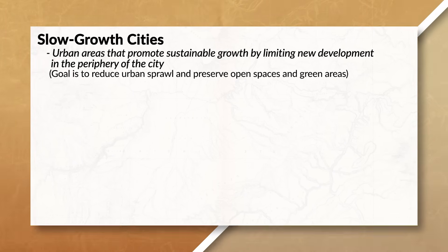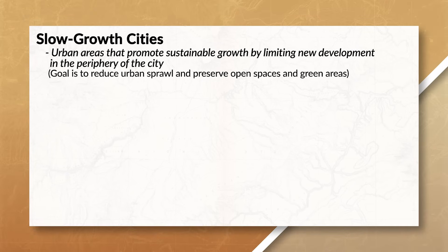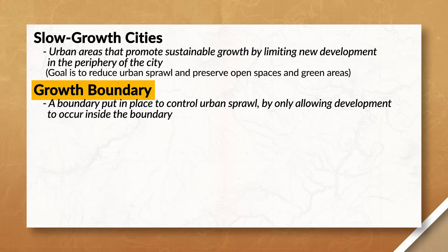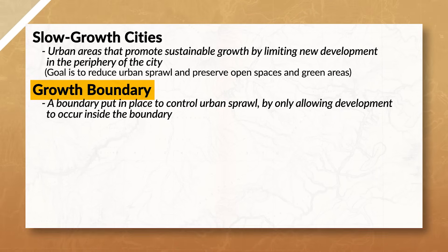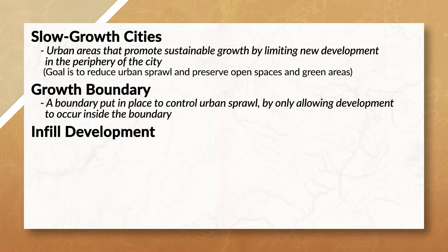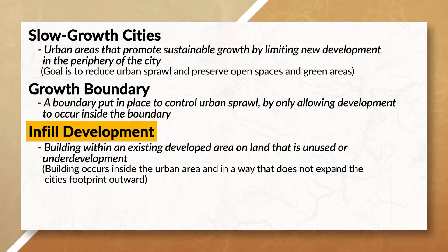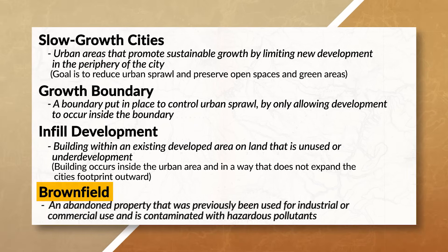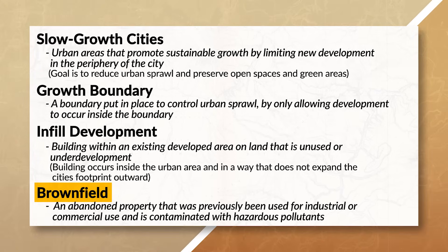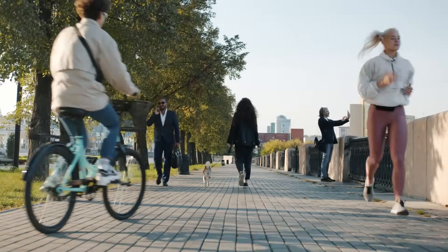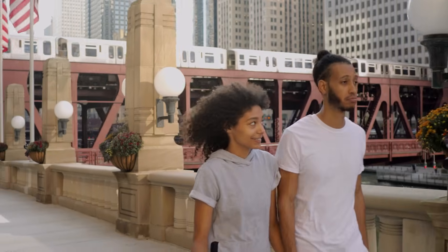Oftentimes these cities will implement growth boundaries, which restrict the expansion of the city's footprint, prevent urban sprawl, and may even create green belts to protect natural areas. These cities often encourage infill development, which is when cities seek to promote the development of vacant or undeveloped land within an already developed area. This can take the form of developing new buildings on vacant lots, converting older buildings for new uses, or redeveloping brownfield sites — land that was contaminated by previously industrial or commercial use, cleaned up and repurposed for new use. Slow growth cities also promote public transportation, infrastructure for pedestrians and cyclists, and other transportation options which reduce residents' reliance on personal vehicles.